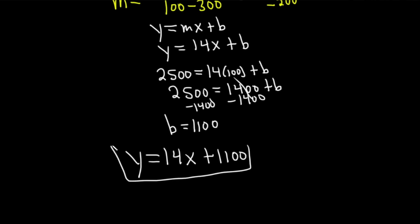So finally, we end up with y equals 14x plus, and then b was 1,100. So we get 1,100. So now we have our linear model, right? This was the model that was asked for in the problem, y equals 14x plus 1,100.